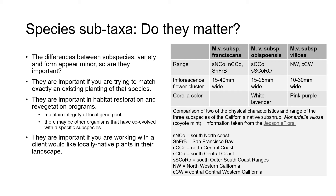Subtaxa can also be important if you're working with a client who would like only locally native plants in their landscape. In the table on the right, you can see a comparison of two physical characteristics and the range of three subspecies of the California native subshrub coyote mint, Monodella villosa. There are slight differences in flower color between subspecies abyspoensis and subspecies villosa, and slight differences in the size of the flower cluster between the three subspecies. It's possible that these differences may be associated with the pollinators of these plants within their native range, meaning that by planting the wrong subspecies you may be planting a plant with flowers that are not accessible to a particular pollinator.